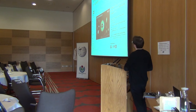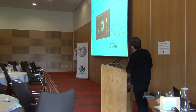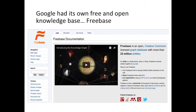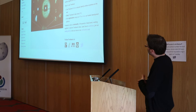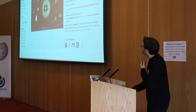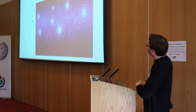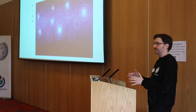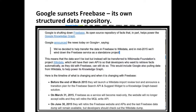Wikidata is the free and open knowledge base. To put it in context, Google had its own free and open knowledge base called Freebase — a Creative Commons licensed graph database with more than 23 million entities. Google decided to wind it down and migrate all the data from Freebase into Wikidata.